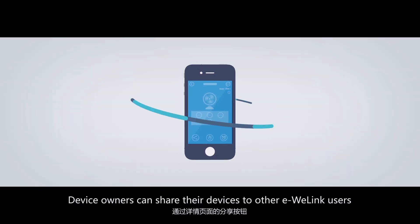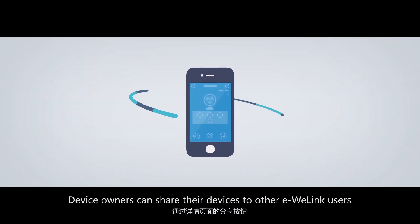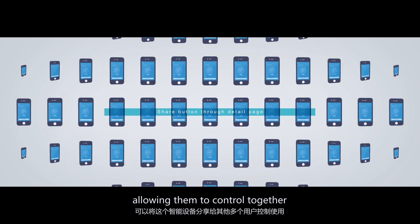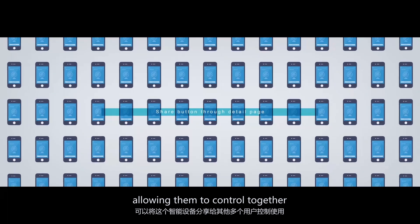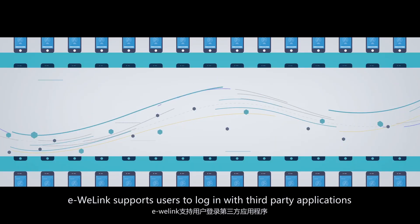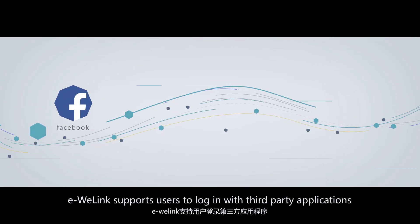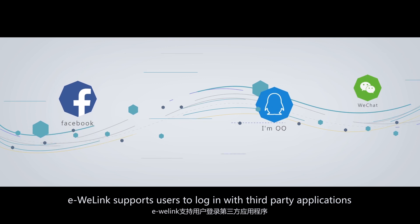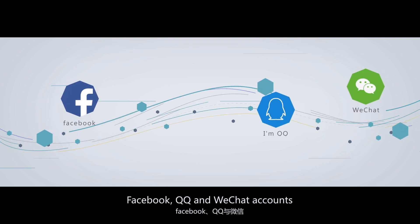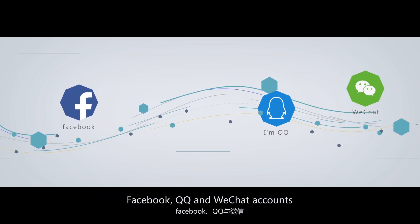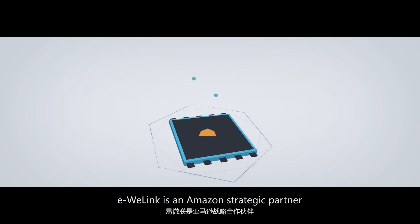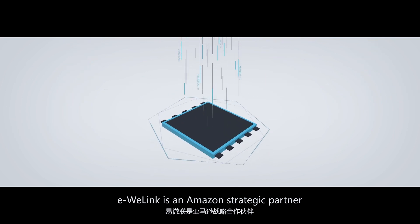Device owners can share their devices with other eWelink users, allowing them to control together. eWelink supports users to log in with third-party applications including Facebook, QQ, and WeChat accounts. eWelink is also an Amazon strategic partner.